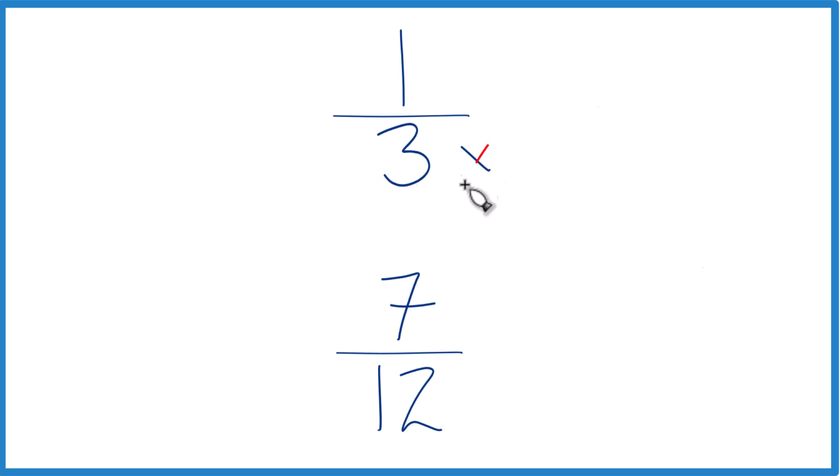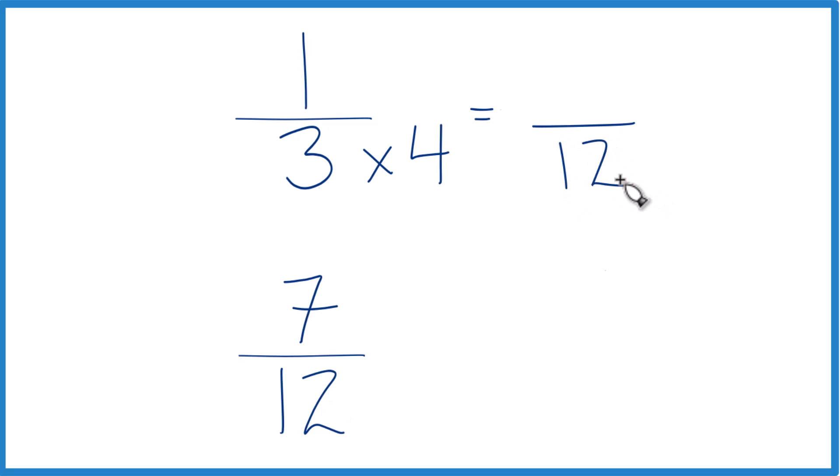Why don't we multiply three times four? Because three times four, that'll give us twelve as our denominator. Down here we already have twelve, so let's just keep it the same.